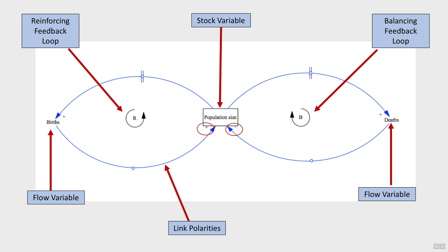Lastly, if there's a delay in the cause and effect relationship, then the link polarity has a time delay sign added to it. And there you have the main components of a causal loop diagram.